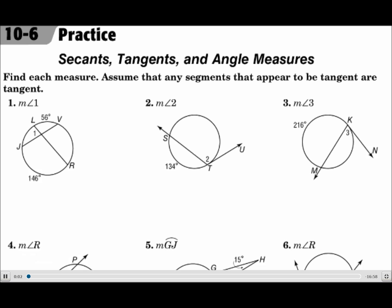This is lesson 10.6: Secants, Tangents, and Angle Measures. Your objectives are to find the measures of angles formed by lines intersecting on or inside a circle, and to find measures of angles formed by lines intersecting outside of a circle.